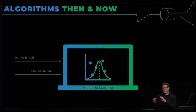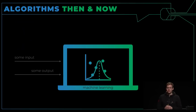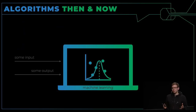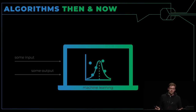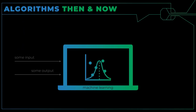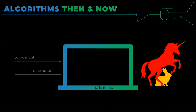Das ist überhaupt nicht, wie Machine Learning funktioniert. Bei Machine Learning geht man davon aus, dass man Eingabe und Ausgabe hat und man hat ein statistisches Modell. Das statistische Modell ist flexibel innerhalb gewisser Parameter und es kann lernen anhand der Ein- und Ausgaben, die man ihm zum Training gibt. Man erzeugt das statistische Modell aus dem Input, den man haben will, und dem Output, den man haben will.